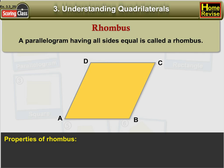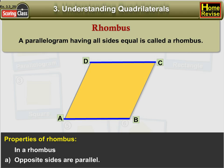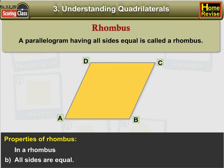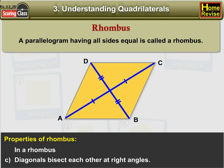Properties of rhombus. In a rhombus: A. Opposite sides are parallel. B. All sides are equal. C. Diagonals bisect each other at right angles.